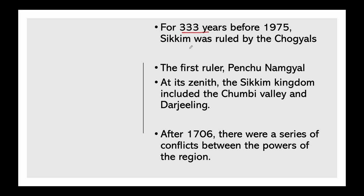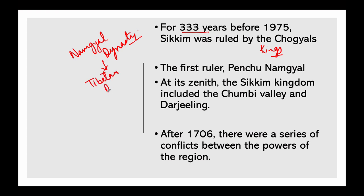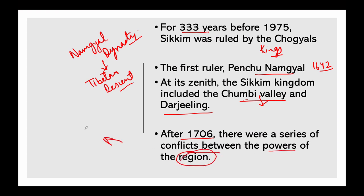For 333 years before 1975, Sikkim was ruled by Chogyal — kings of the Namgyal dynasty — who were basically of Tibetan descent. According to one account, the first ruler, Penchu Namgyal, was installed as king by Tibetan lamas in 1642. At its zenith, the Sikkim kingdom included the Chumbi Valley and Darjeeling. The Chumbi Valley is now a part of China. After 1706, there was a series of conflicts between the powers of the region — Sikkim, Nepal, Bhutan, and Tibet — resulting in a shrinking of Sikkim's territorial boundaries.